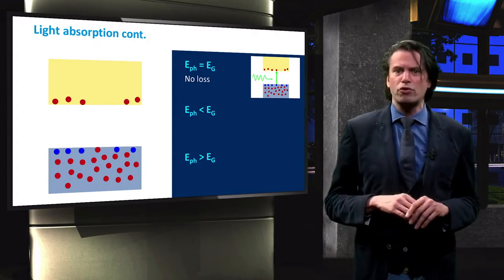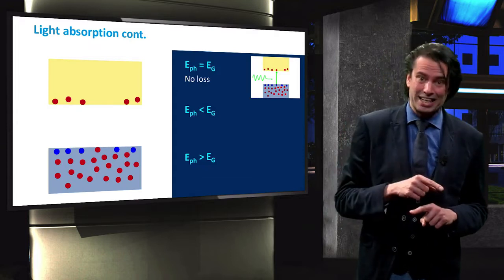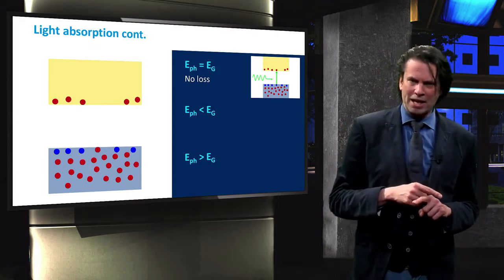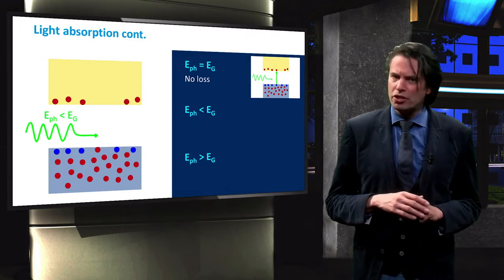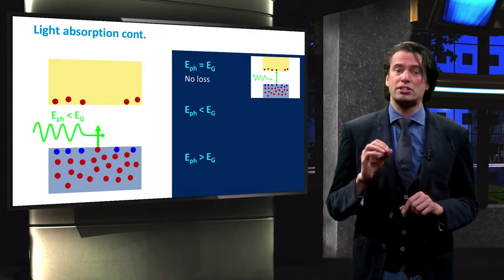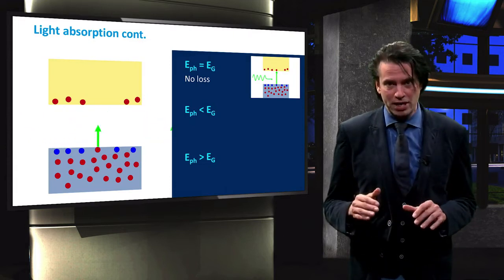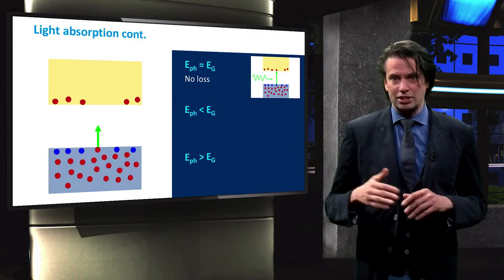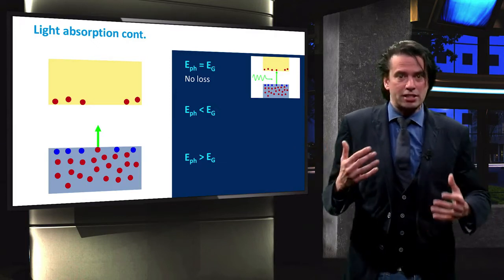Let's now consider photons with energy less than the band gap energy. These photons do not have enough energy to excite an electron from the valence band to the conduction band. Since there are no allowed energy states in the band gap,